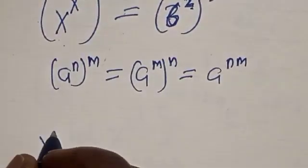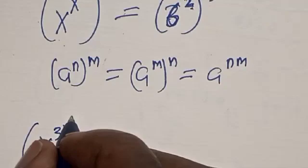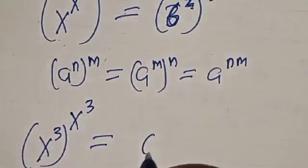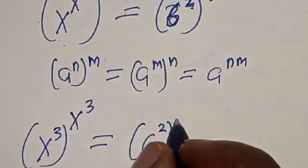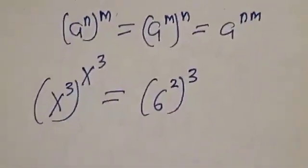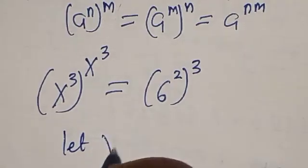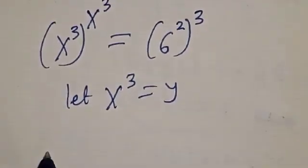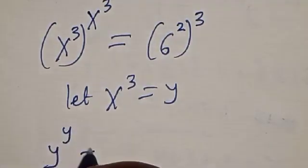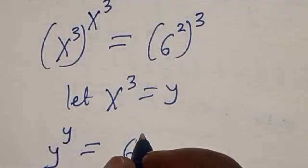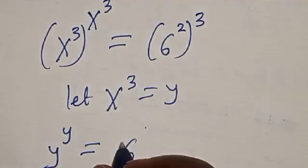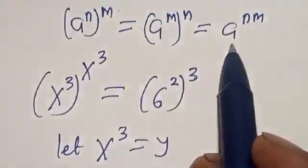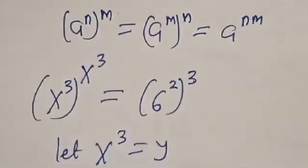Now, s raised to the power 3, raised to the power s raised to the power 3, is equal to 6 squared raised to the power 3. Let s raised to the power 3 equal y. Then y raised to the power y is equal to 6 squared raised to the power 6, since 36 equals 6 squared.